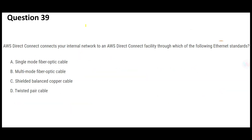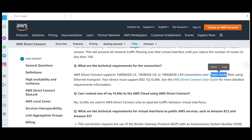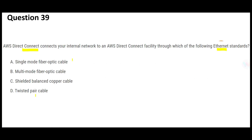The next question is about AWS Direct Connect — which is expensive, like a Mercedes-Benz — and it asks about Ethernet standards: single-mode fiber, multi-mode fiber, shielded pairs, copper cable, twisted pair cable. The question clearly states it uses single-mode fiber Ethernet transport. I showed you in the documentation and this is the correct answer.